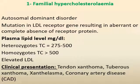Familial hypercholesterolemia is an autosomal dominant disorder due to mutation in the LDL receptor gene, resulting in apparent or complete absence of receptor protein. In heterozygous patients, total cholesterol ranges from 275 to 500 mg/dL, and in homozygous patients, total cholesterol is above 500 mg/dL, with elevated LDL. Clinically, the patient may present with tendon xanthoma, tuberous xanthoma, xanthelasma, and coronary artery disease.